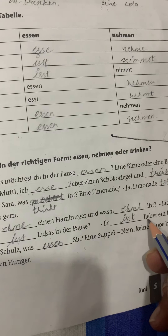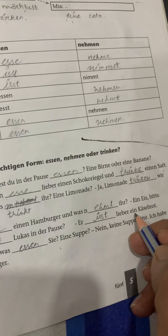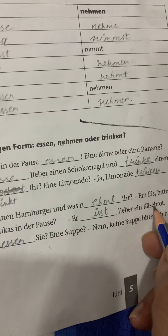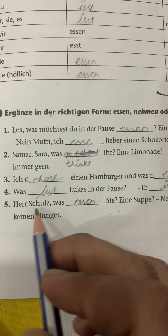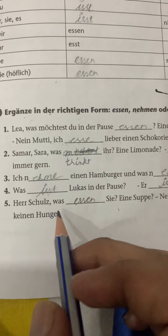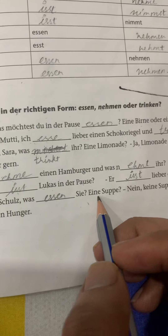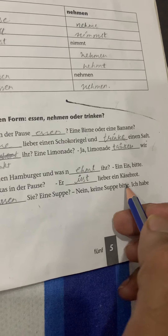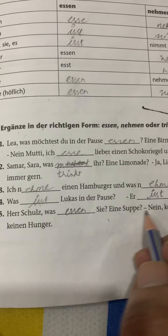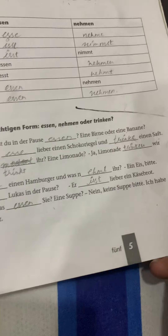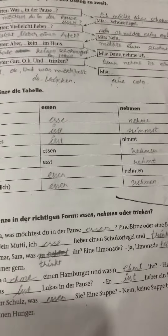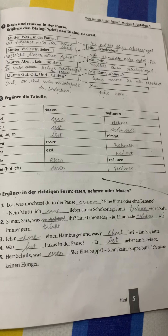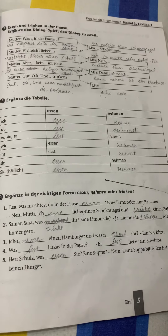Er isst einen Leberkäse, einen Käsebrot — he likes to eat a cheese bread; Käsebrot is cheese here. Was dash the here, Jul — what do you eat? Eine Suppe — a soup. Nein, keine Suppe bitte — not soup. Ich habe keinen Hunger — I am not hungry. This is your ninth exercise; complete these exercises in your book. Thank you.